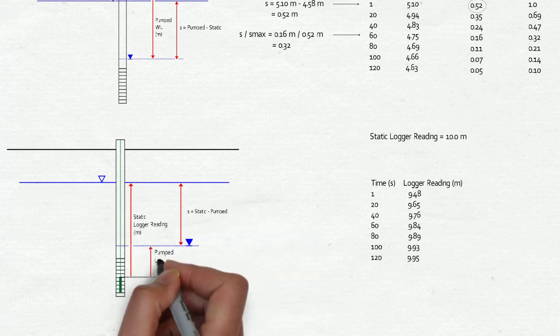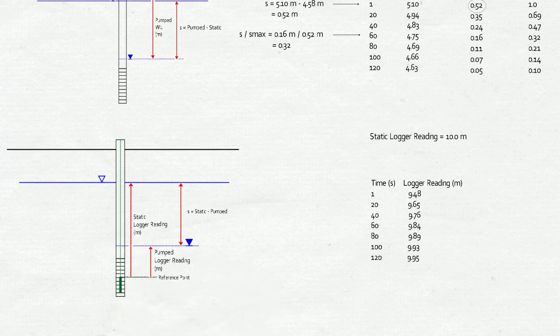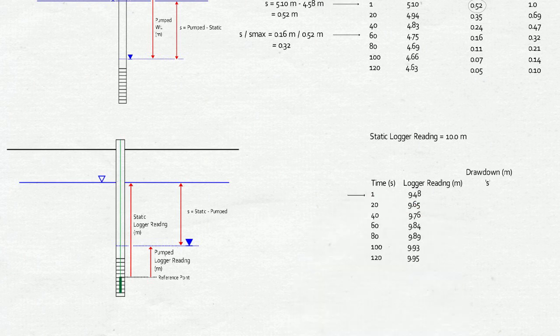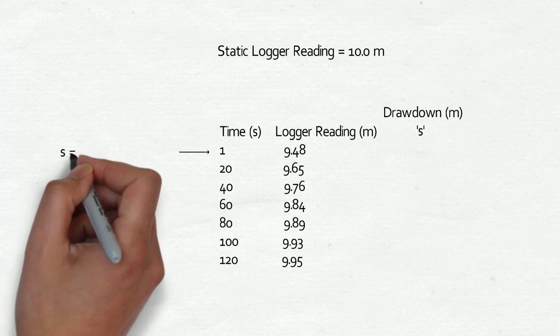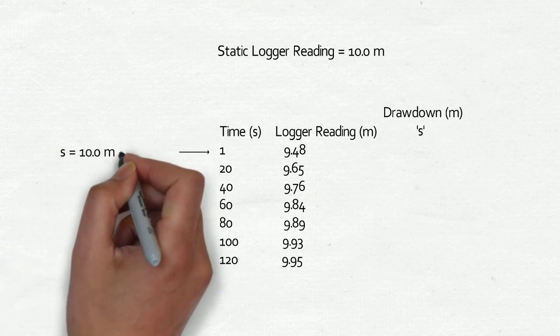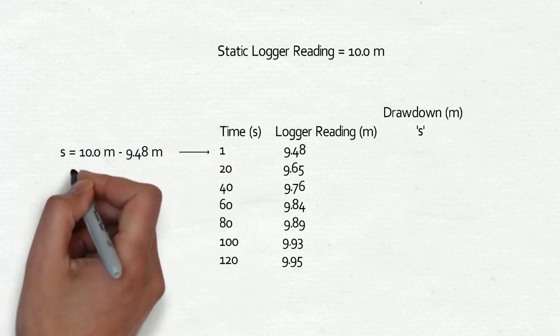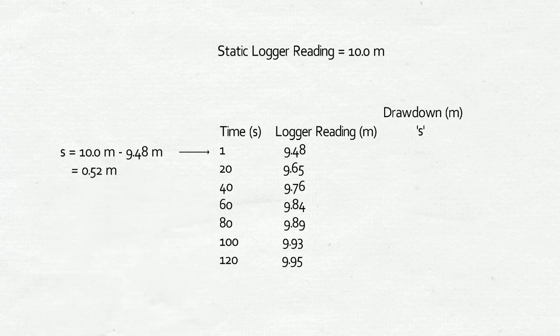In this case, calculate the drawdown by subtracting the logger level at each time in the table from the static logger reading. For the first data point, at time equals one second, the logger reading is 9.48 meters. 10 meters minus 9.48 meters gives us 0.52 meters.